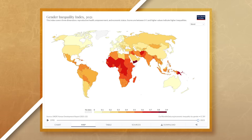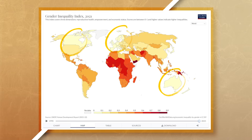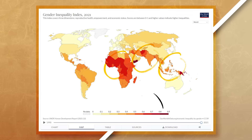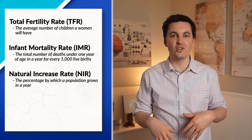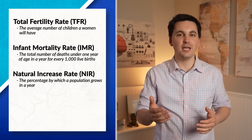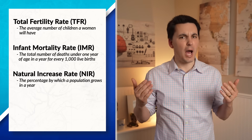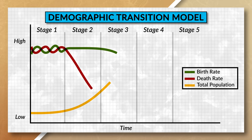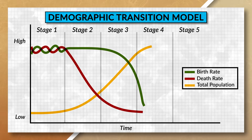Generally, countries with more economic development are more likely to have a lower GII, while countries with less economic development generally have a higher GII. This connects back to demographic data, where we analyzed the impact that economic development has on a country's TFR, IMR, literacy rates, access to medicine, and population growth. Countries not far along in the demographic transition model tend to have a high natural increase rate, higher infant mortality rate, and higher total fertility rate. They are also more likely to give women fewer economic and social opportunities and have traditional gender roles in place.